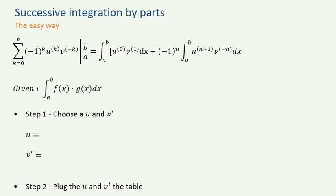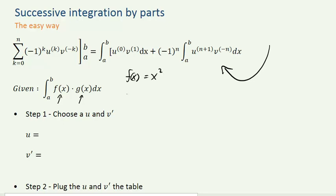This is successive integration by parts. We're going to use this formula here, and we're going to be given the f(x) and g(x) functions. So let's say f(x) is equal to x squared and g(x) equals sine x.